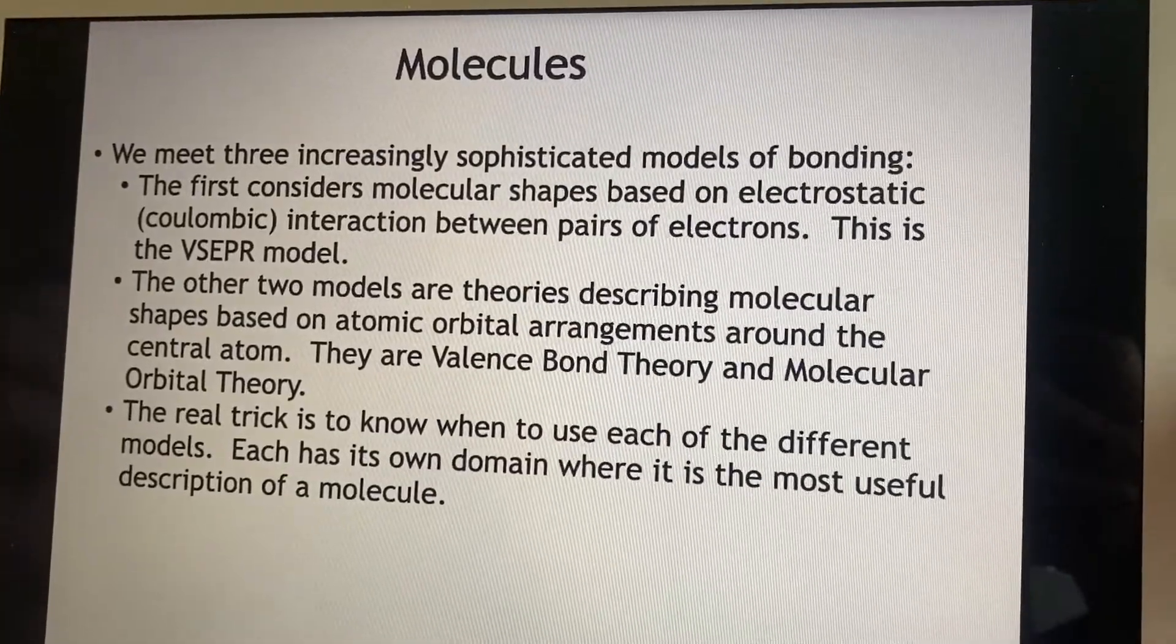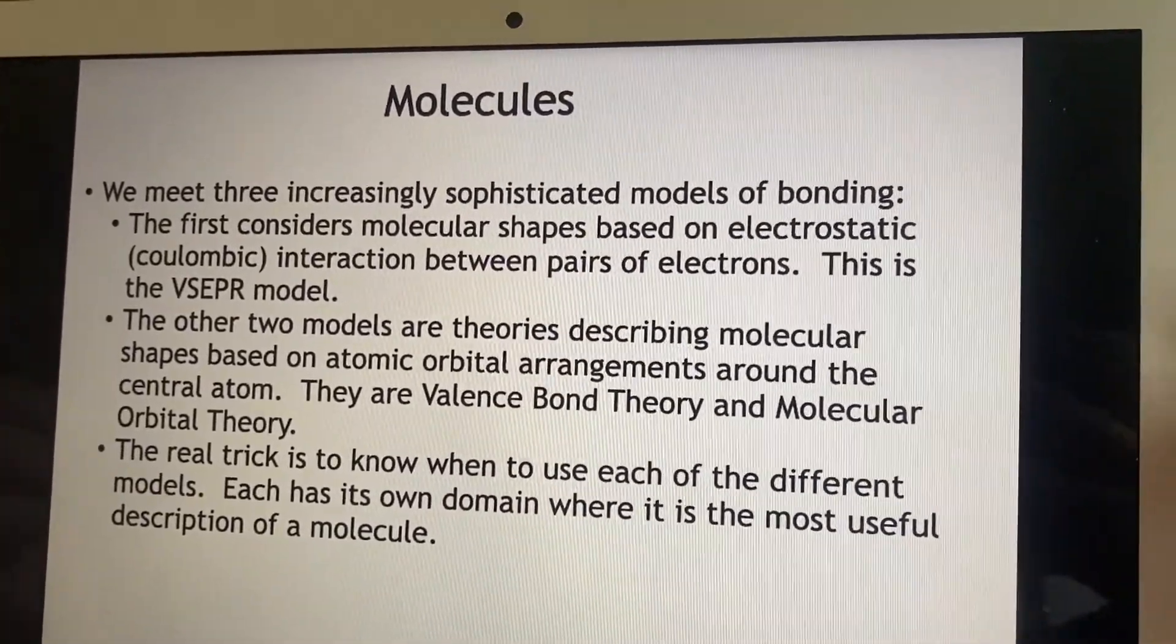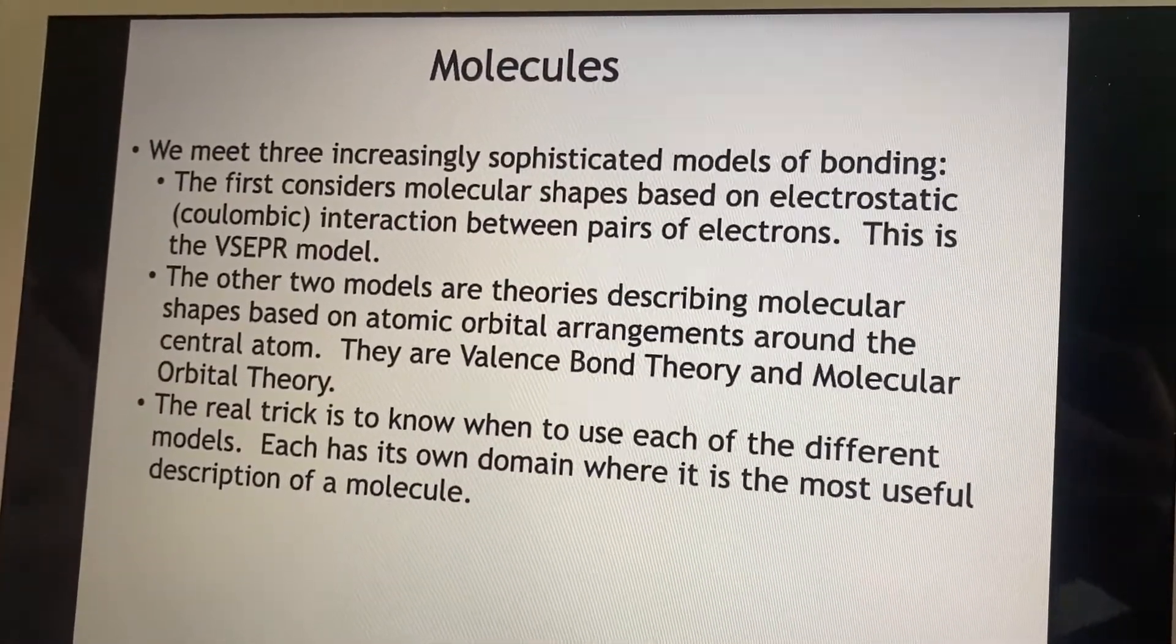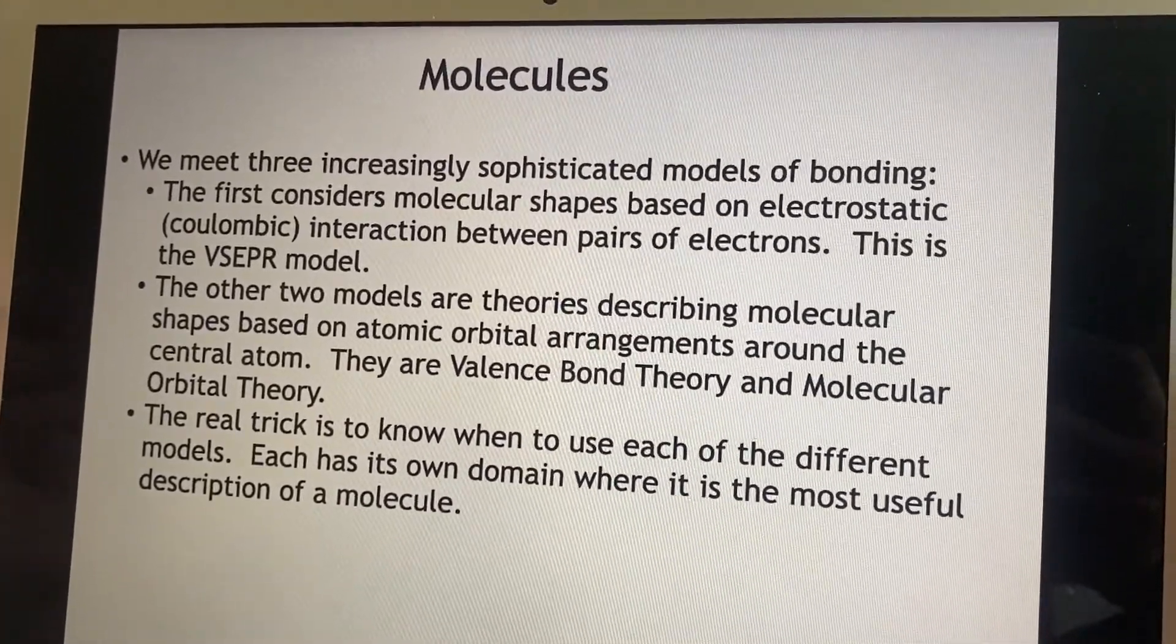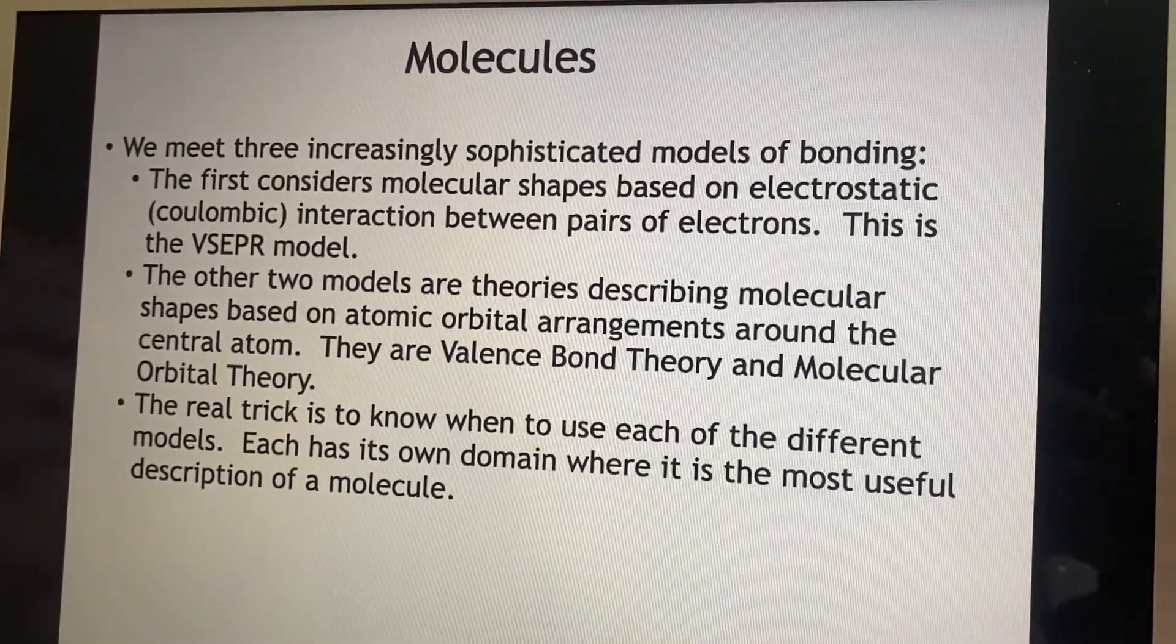The first one is just going to consider the idea of what molecular shapes happen as a result of the electrostatics between pairs of electrons. This is the VSEPR model, which because it takes so long to say VSEPR, most people just say vesper.